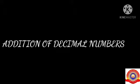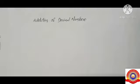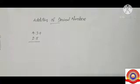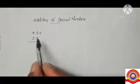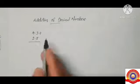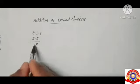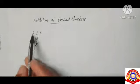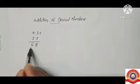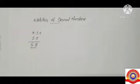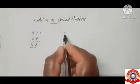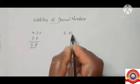Next we have to learn addition of decimal numbers. The first example is 4.3 plus 2.5. In the decimal part, 3 plus 5 is 8. In the whole part, 4 plus 2 is 6. So the answer is 6.8.